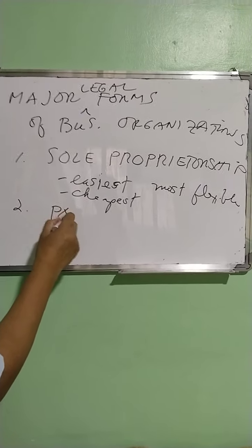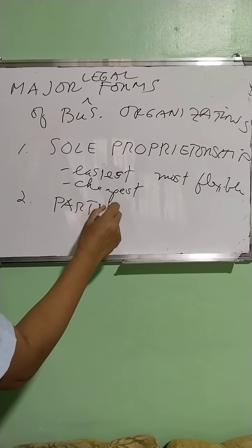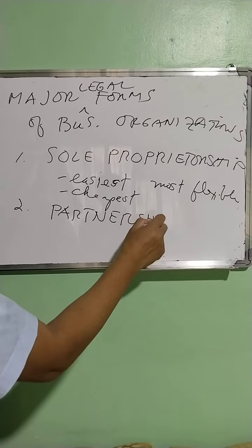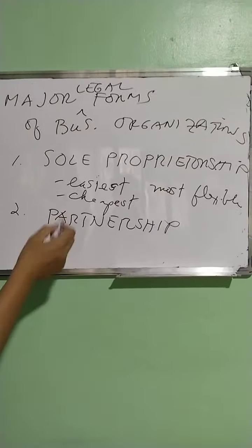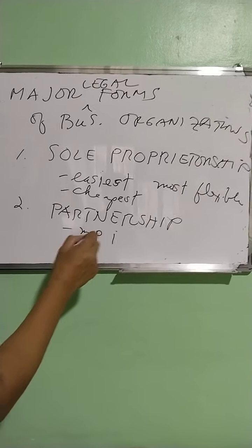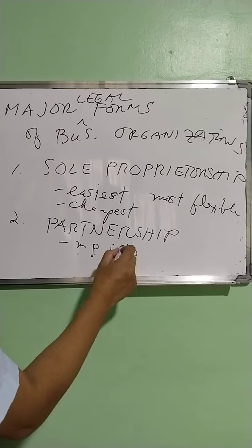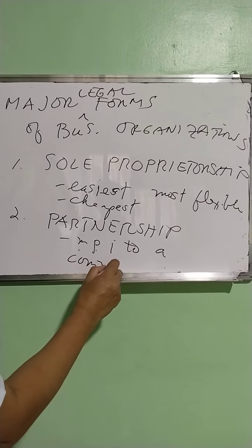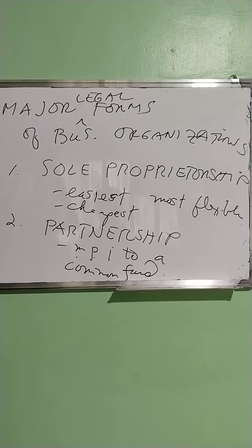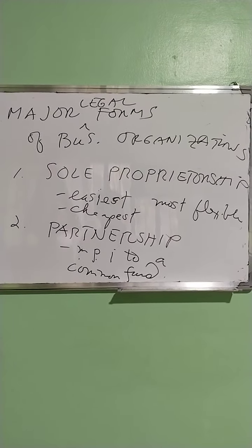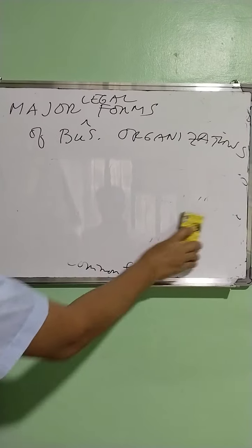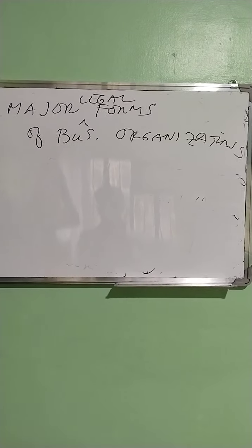The second is what we call partnership. A partnership is a contract whereby two or more persons bind themselves to contribute money, property, or industry to a common fund, with the intention of dividing the profits among themselves. And the most complicated of the three would be the corporation.